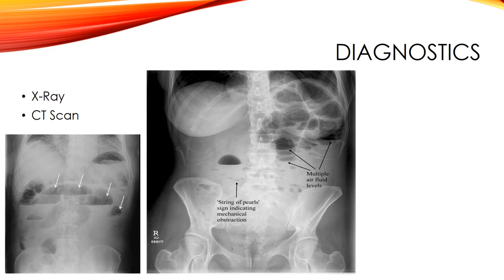For diagnostics, an x-ray and CT scan are used. Two images are shown as good indicators of small bowel obstruction — including a 'string of pearls' sign — where stool is visibly sitting still and not moving.